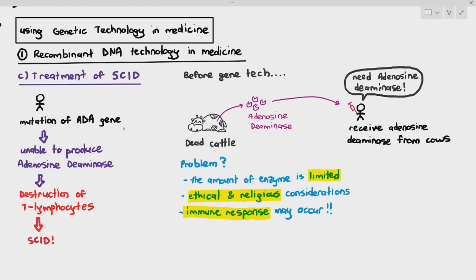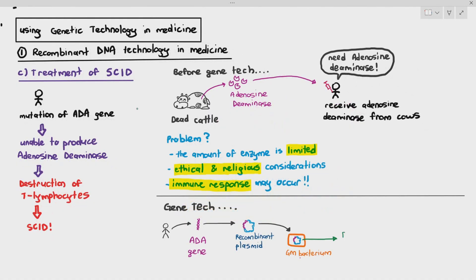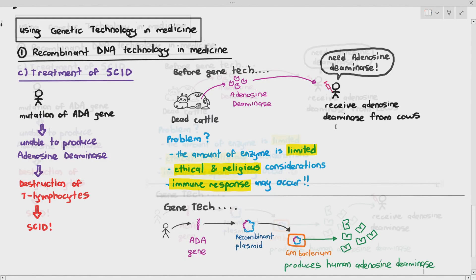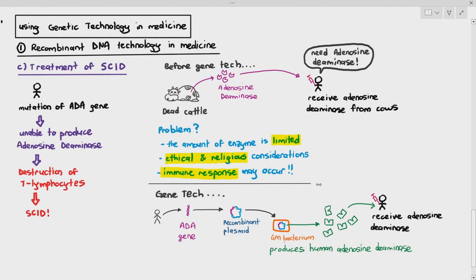So the next thing is, what's the solution to this problem? We would use gene tech. So we would take the ADA gene from a healthy person, put it into a recombinant plasmid, and we can put this into the bacterium. And guess what? The bacterium produces human adenosine deaminase, as opposed to cow adenosine deaminase. We can take that adenosine deaminase, and we can inject it into the baby or the infant.